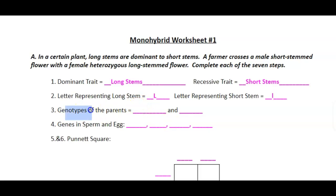Now we have to figure out the genotypes, the letters of the parents. So it says a male short-stemmed flower. Remember short stem is recessive. So if it's recessive, it's got to have two little L's in order to show that recessive trait.